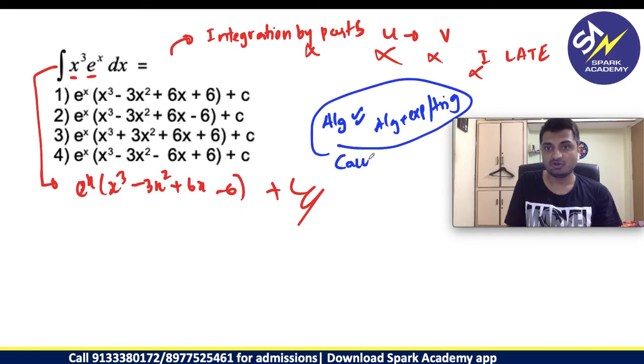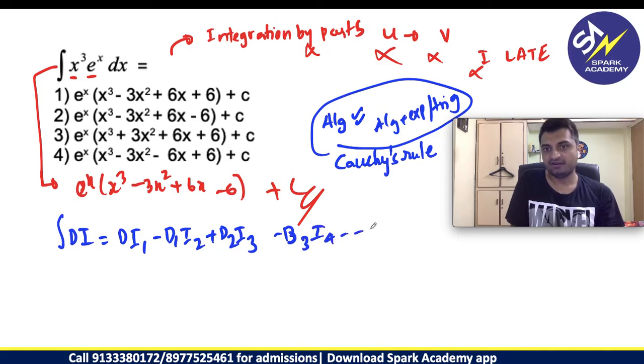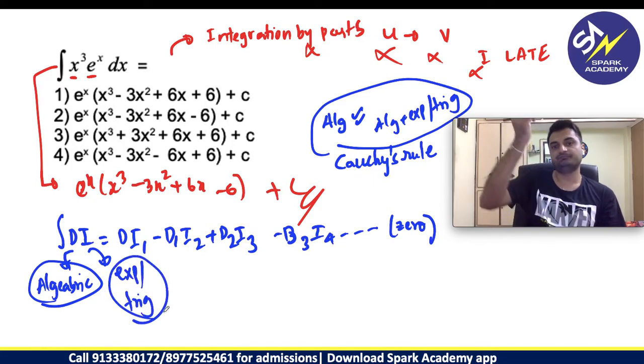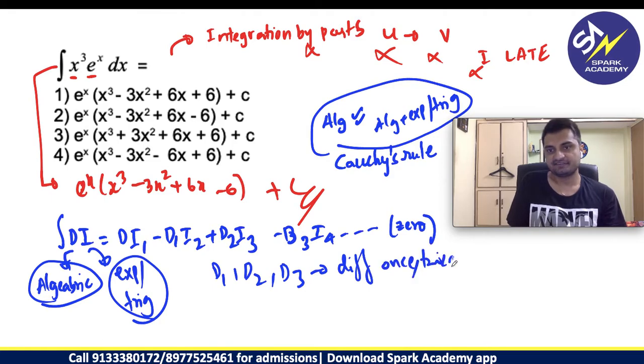Cauchy's rule states that integral DI is nothing but DI₁ minus D₁I₂ plus D₂I₃ minus D₃I₄, where you are differentiating once, twice, thrice.